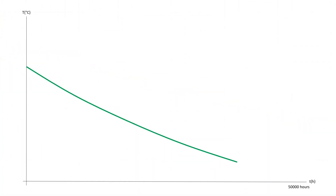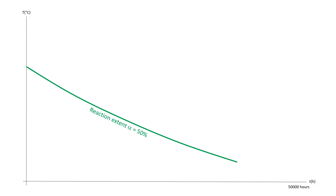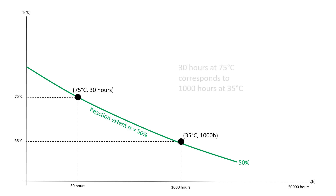The green line on the displayed TTT diagram presents the dependence between time and temperature for the decomposition extent alpha of 50%. The plot shows that the reaction extent of 50% is reached after 30 hours at 75 degrees Celsius or after 1,000 hours at 35 degrees Celsius.